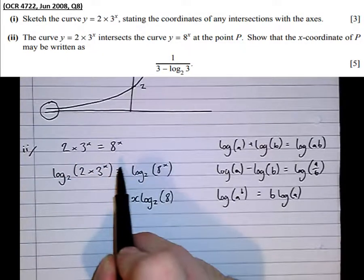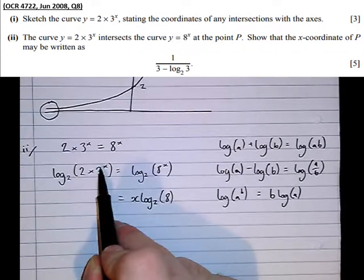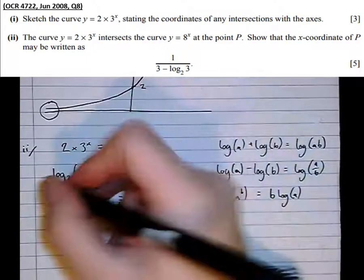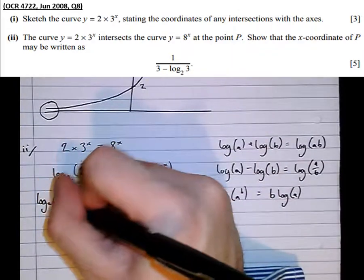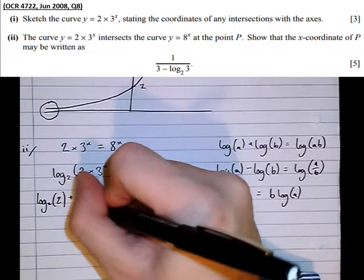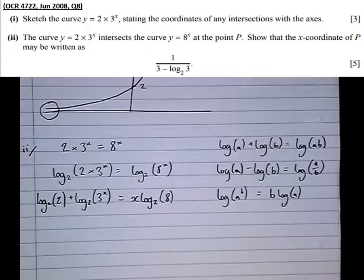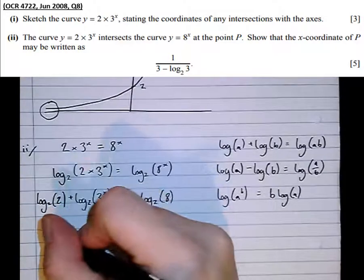If you throw the x to the front of all the brackets, you're saying that x belongs to the 2 as well, which it doesn't. The first thing we need to do is split this up using the addition rule. So log to the base 2 of 2 plus log to the base 2 of 3 to the power of x. That's the first step. Notice that log to the base 2 of 2 is 1.